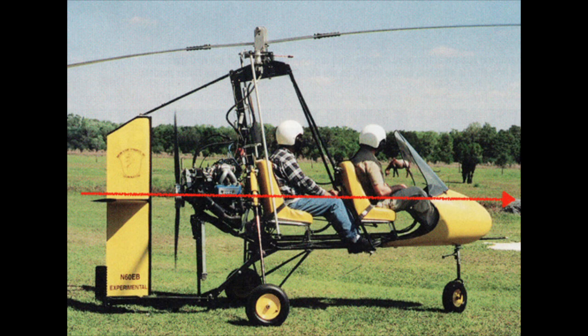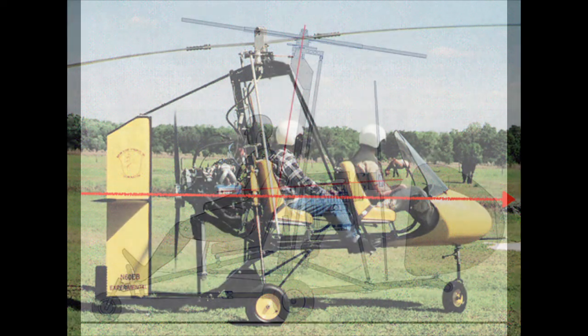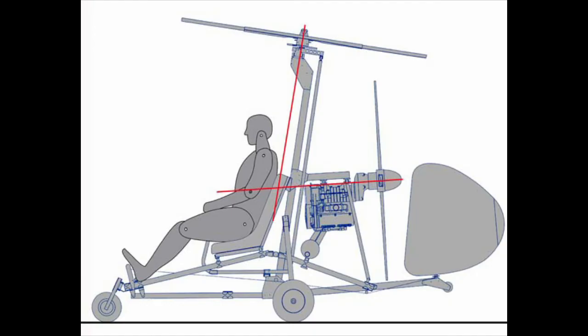Or you could just design the aircraft that way in the first place, as per the Dominator. However, as you can see, these aircraft designs are not all that pleasing on the eye. Another solution is to incline the engine mount so that the propeller thrust is angled downwards and towards the CoG, as you can see in this diagram.